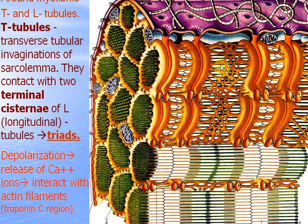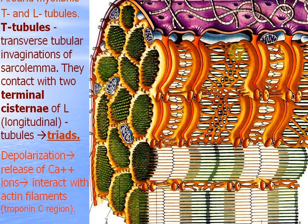Longitudinal tubules belong to smooth endoplasmic reticulum, or sarcoplasmic reticulum. These tubules go mostly longitudinally, but there are many anastomoses between them. They go between myofibrils. They have cisterns which store calcium ions. The terminal cisterns of sarcoplasmic reticulum are located on both sides of the T-tubules. So three structures together — one T-tubule and two terminal cisterns — are called triads.